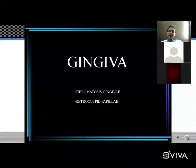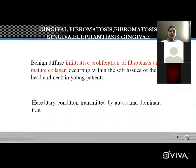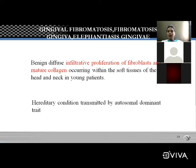The next developmental disturbance is of the gingiva: fibromatosis gingiva and retrocuspid papilla. Fibromatosis gingiva — also called gingival fibromatosis and elephantiasis gingiva — is a benign diffuse condition. It is a diffuse infiltrative proliferation of fibroblasts and mature collagen within the soft tissue of the head and neck in young patients. It is a hereditary condition transmitted by autosomal dominant trait.